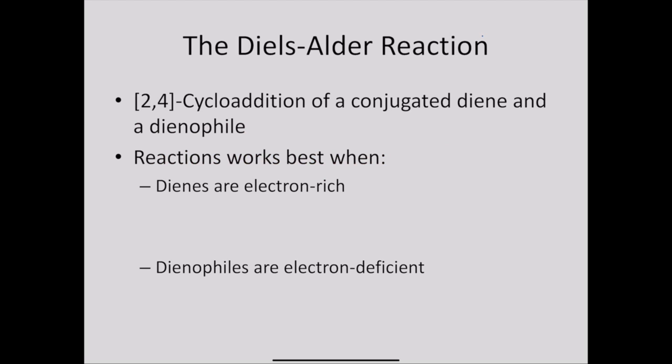Diels-Alder is very useful, as it is one of the most powerful synthetic methods for synthesizing unsaturated six-membered rings. The Diels-Alder reaction is classified as a 2,4-cycloaddition of a conjugated diene, which just means you have two alkenes right next to each other that are conjugated with each other, and a dienophile, which can either be an alkene or an alkyne. For today's lab, we'll be focusing primarily on alkenes as the dienophile.